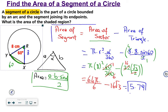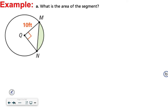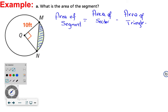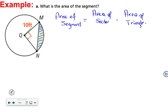Remember this method. Next question: what is the area of this segment? To find the area of the segment, first find the area of the sector, then subtract the area of the triangle. If the radius is 10 feet, then both sides of the triangle are 10 feet. If the central angle is 90 degrees, the measure of the arc is also 90 degrees.